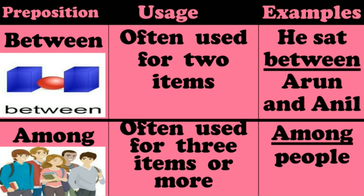First one: between. Usage — often used for two items or two persons. For example, he sat between Arun and Anil.